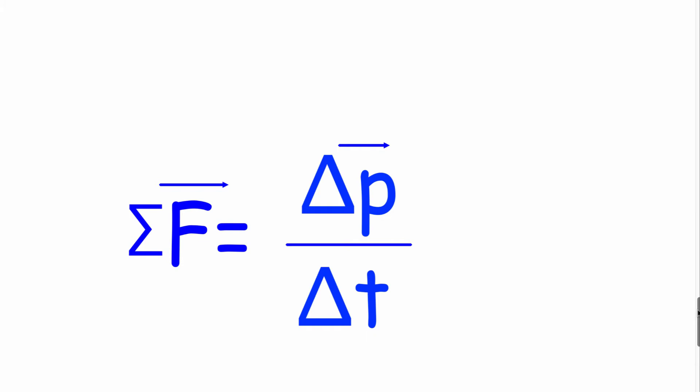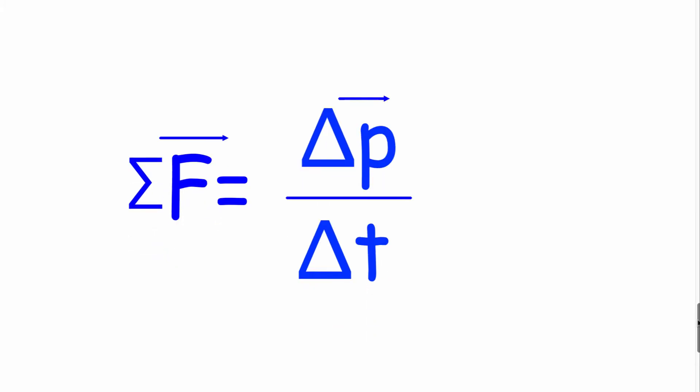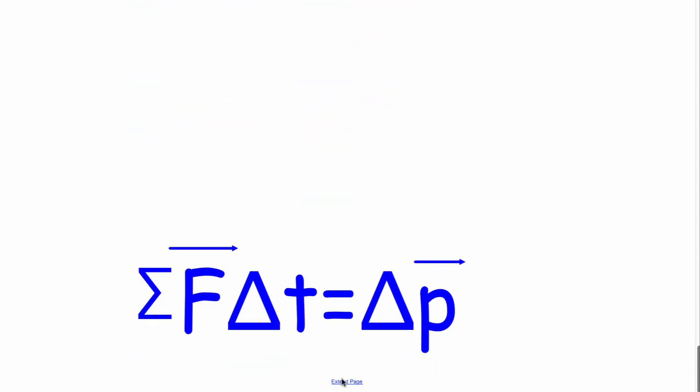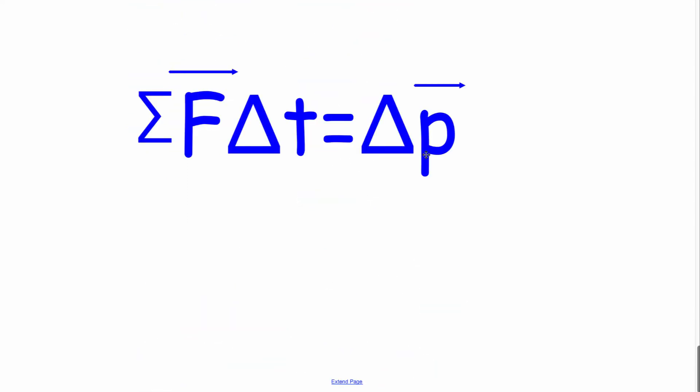And if we multiply both sides by delta t, we get change in momentum, otherwise known as impulse, is equal to the sum of the forces times the time interval.